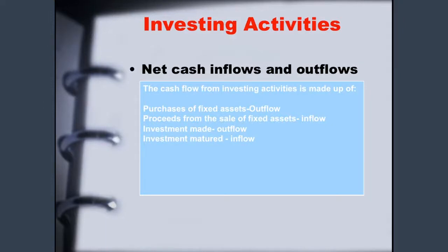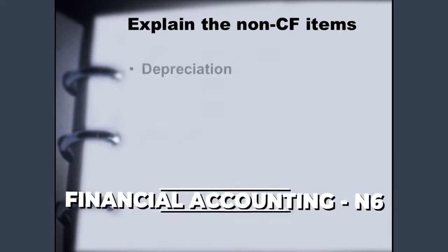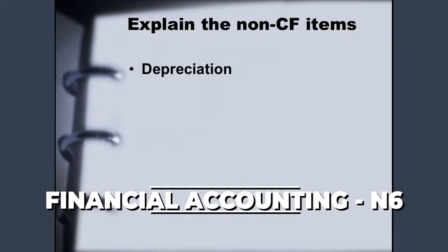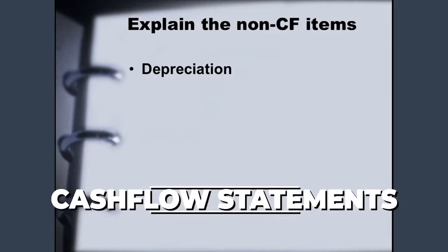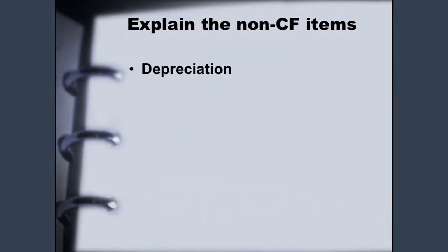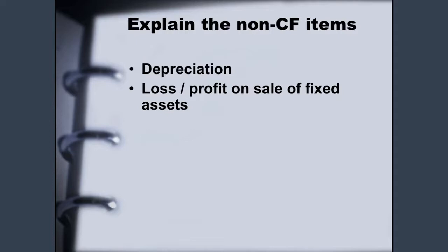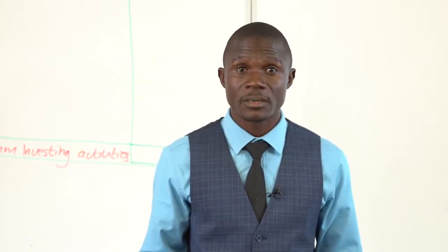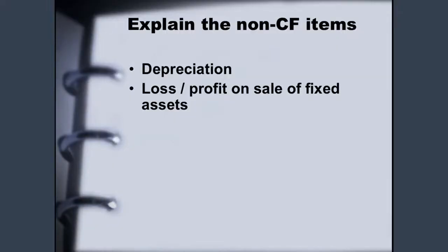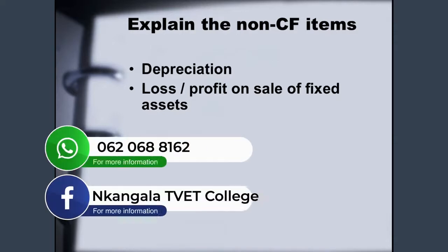Now let's break down the non-cash flow items. Depreciation — we use assets such as a vehicle to deliver stock to customers, and by using the vehicle every day it loses value. So you need to calculate depreciation, so that when you sell the vehicle you sell it at the net carrying value. The net carrying value comes from: original cost minus depreciation equals net carrying value. Loss or profit on sale of fixed assets — when you sell assets you can either make a loss or a profit, and we will do an activity to see how this profit or loss arises.